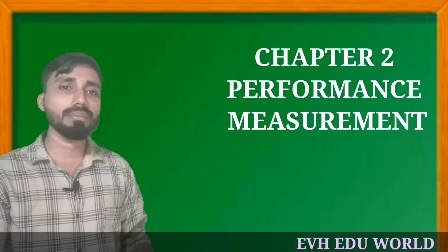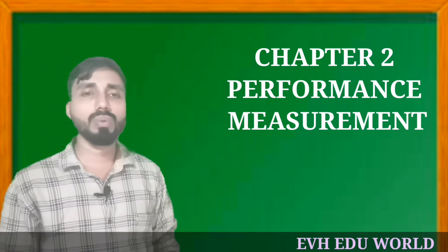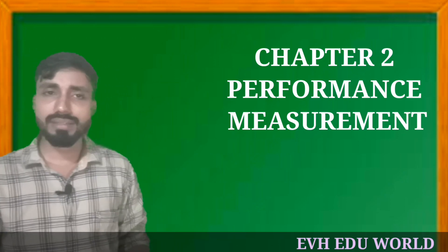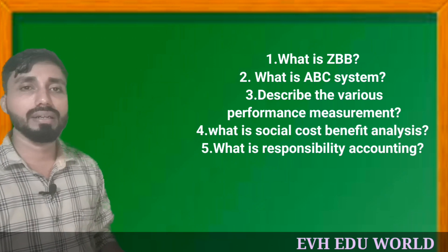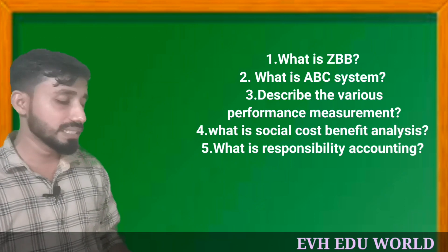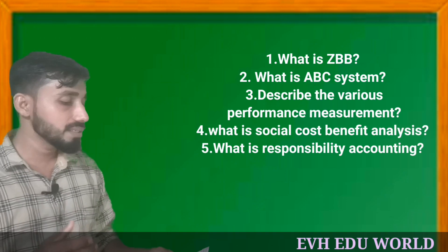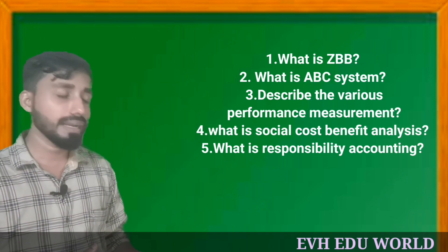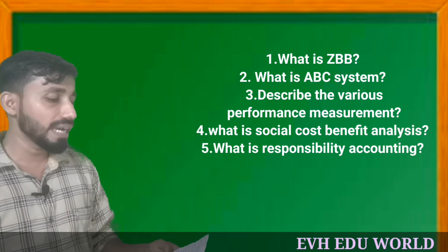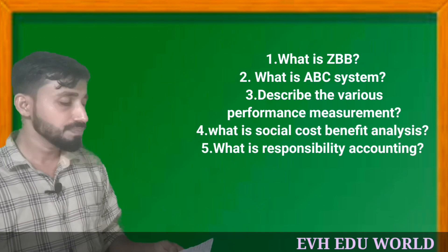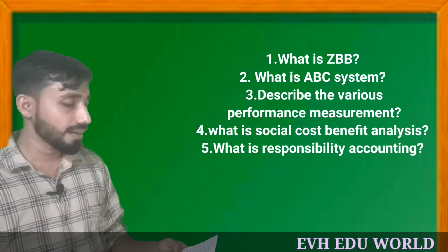Chapter 2: Performance Measurement. Previous year questions include: What is ZBB — Zero Based Budgeting? What is ABC System — Activity Based Costing? Describe the various performance measurement techniques. What is social cost benefit analysis?